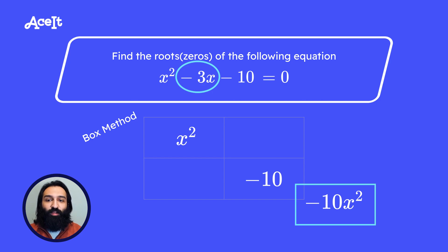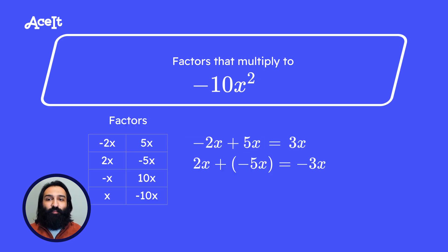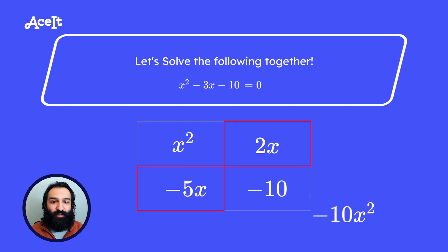Our goal now is to find two numbers that multiply to negative 10x squared and combine to negative 3x. We can do this by first listing out all the factors of negative 10x squared. Once we finish listing out all the factors, we can start combining them to see which one of them add up to negative 3x which is our middle term. We can see that 2x and negative 5x will combine to give us negative 3x so those are the numbers we're going to put in the boxes. It doesn't matter what order you put them in.